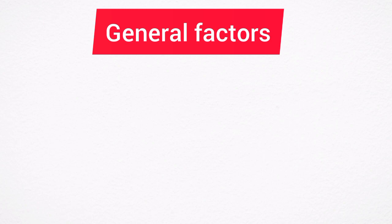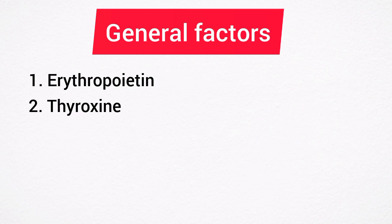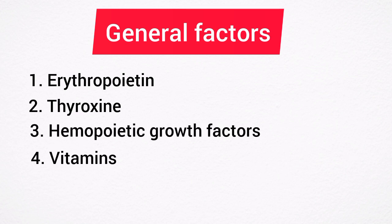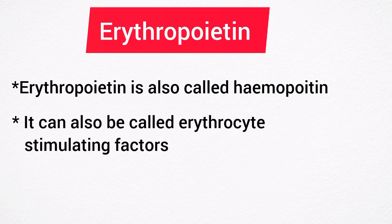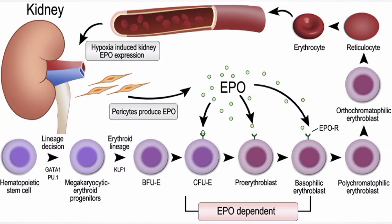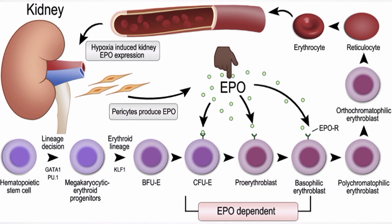The general factors necessary for erythropoiesis are erythropoietin, thyroid hormone, hemopoietic growth factors, and vitamins. The most important general factor for erythropoiesis is the hormone called erythropoietin, also called hemopoietin or erythrocyte stimulating factor. It is secreted by the peritubular capillaries of the kidney. The stimulant for erythropoietin is hypoxia — when oxygen content in the tissues is low, it results in the secretion of erythropoietin, causing formation and release of new erythrocytes into the circulation.